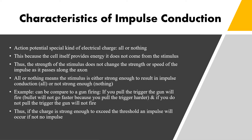Characteristics of impulse conduction: the action potential is a special kind of electrical charge called all-or-nothing. This is because the cell itself provides the energy — it does not come from the stimulus. Therefore, the strength of the stimulus does not change the strength or speed of the impulse as it passes along the axon. All-or-nothing means the stimulus is either strong enough to result in impulse conduction, or it is not. This can be compared to a gun firing — if you pull the trigger, the gun fires; if not, it does not. If the charge exceeds the threshold, an impulse occurs; if not, there is no impulse.